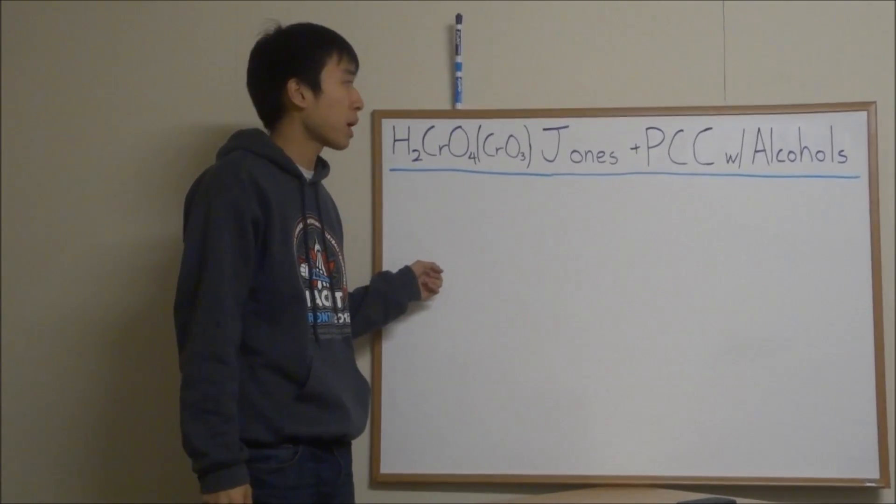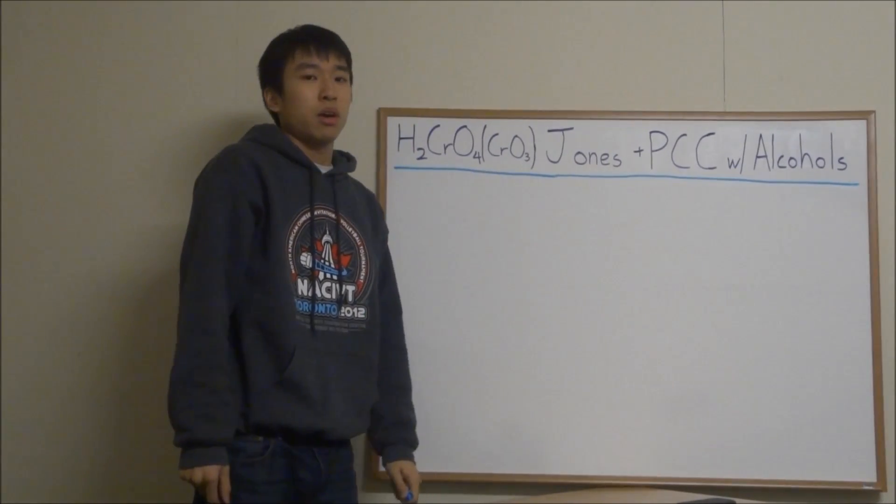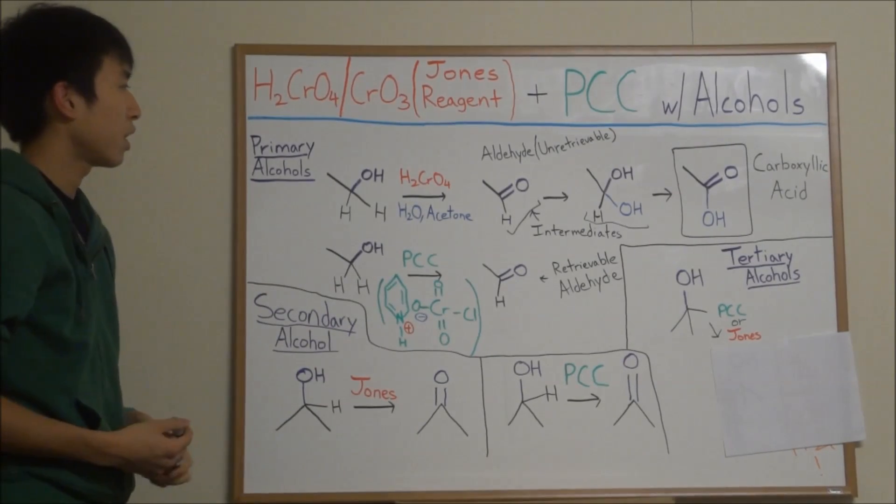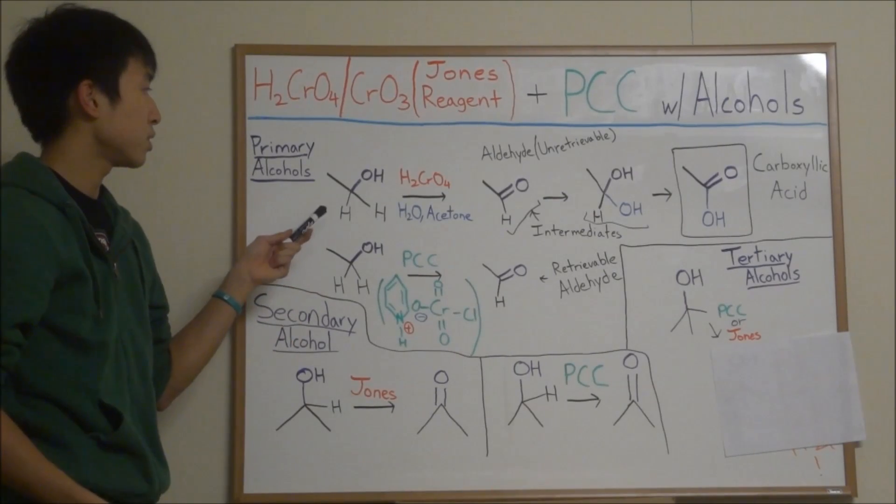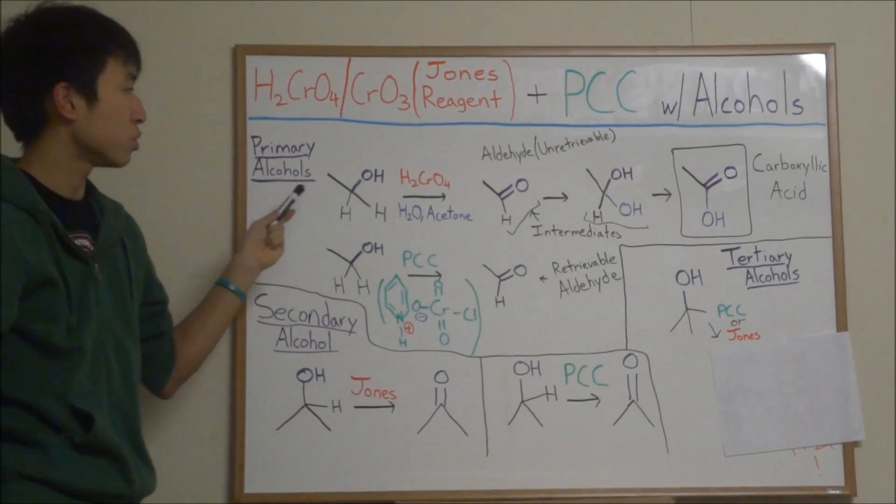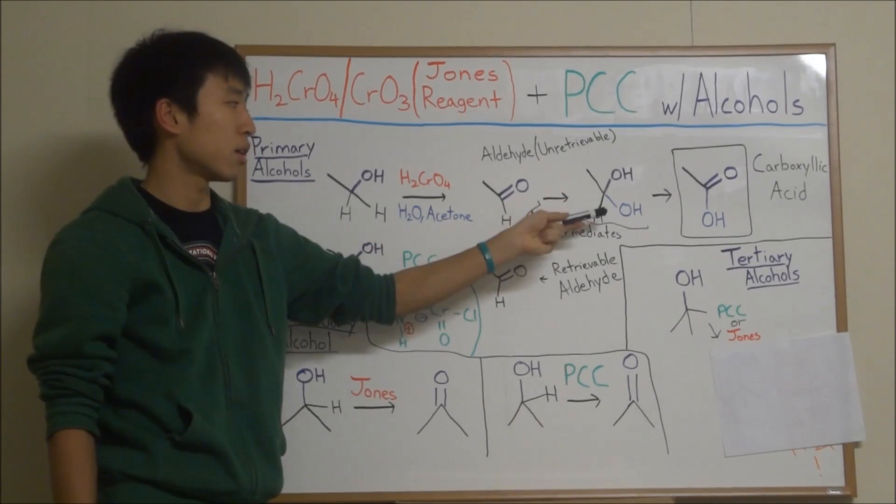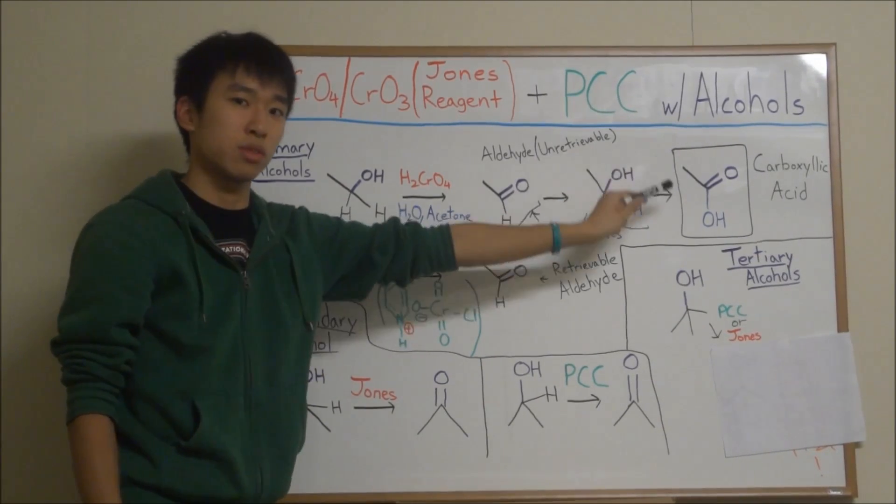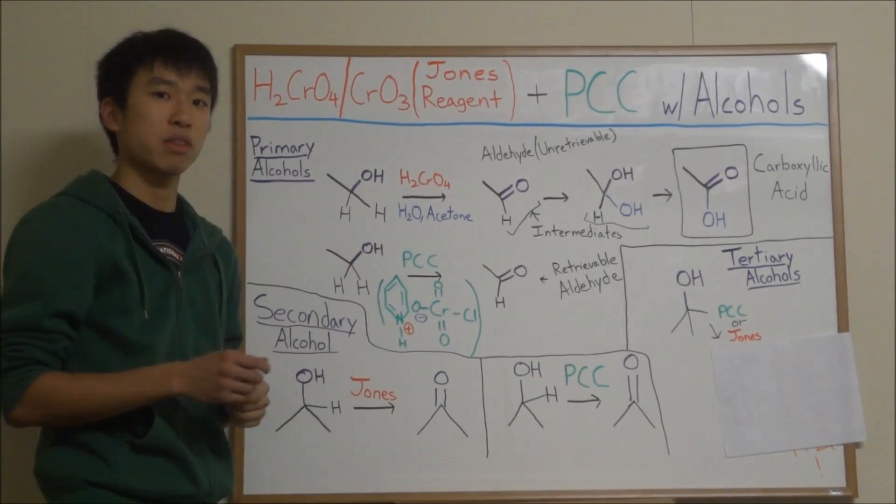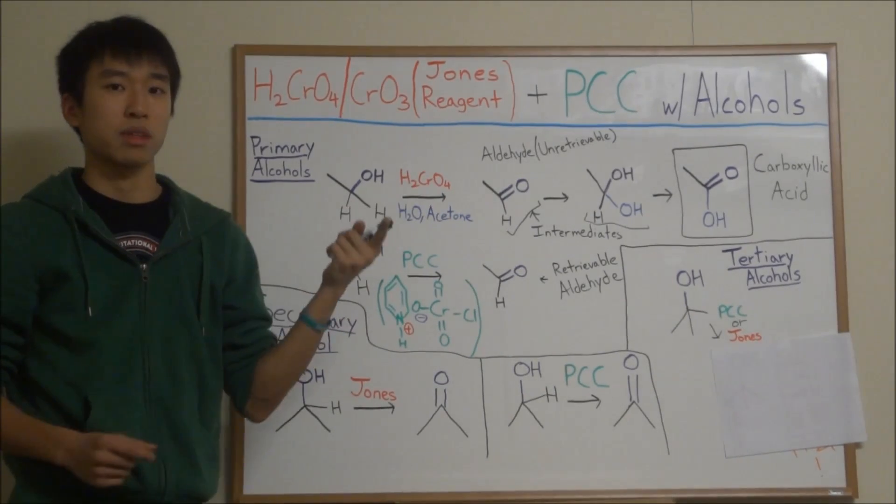A primary alcohol, what happens when it reacts with your Jones Reagent is that it becomes a carboxylic acid. For a primary alcohol, your Jones Reagent oxidizes your alcohol from a primary alcohol to an aldehyde intermediate, and then to a diol intermediate, and then finally to carboxylic acid. Keep in mind that the aldehyde intermediate here, you can't retrieve it because this reaction happens so fast that it just goes straight to carboxylic acid.